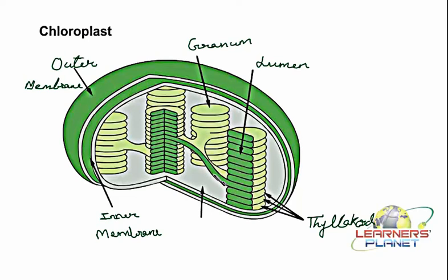Now, all these stacks and the inner membrane are actually bounding a space inside, and that space is filled with a jelly-like substance. This jelly-like substance is known as the stroma. The stroma is rich in various types of biomolecules — enzymes, carbohydrates, and many other biomolecules — which are required for the functioning and maintaining the inner structure of this organelle.